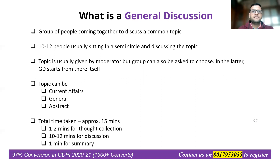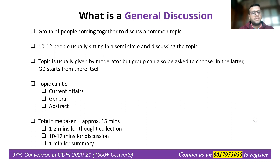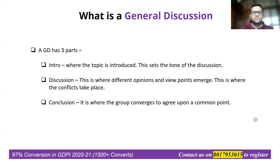The total time for a GD is roughly 15 minutes: one to two minutes for thought collection, then 10 to 12 minutes for discussion, and then one minute for a summary. But this is not written in stone — it can change. I have seen some GDs extending to 20 minutes for discussion, depending on the format or the moderators, and this will generally be told to you beforehand.